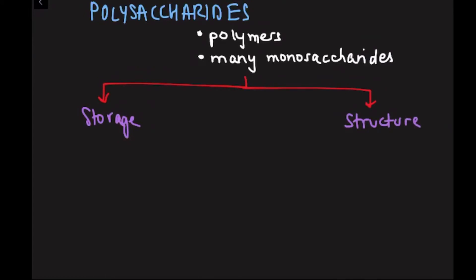An example of a storage polysaccharide in plants is called starch. Starch is stored in different parts of plants, like roots, leaves, stems. This is so that it can be hydrolyzed and used as energy for cellular processes, like cellular respiration.